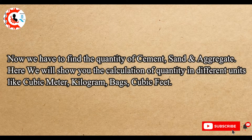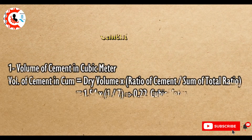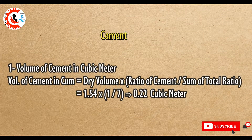Now we have to find the quantity of cement, sand, and aggregate. We will show the calculation in different units: cubic meter, kilogram, bags, and cubic feet. Cement: Volume of cement in cubic meter equals dry volume multiplied by ratio of cement divided by sum of total ratio. 1.54 × (1/7) equals 0.22 cubic meter.